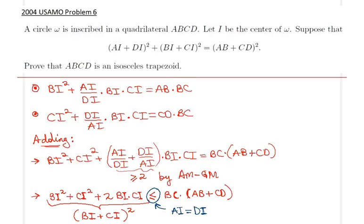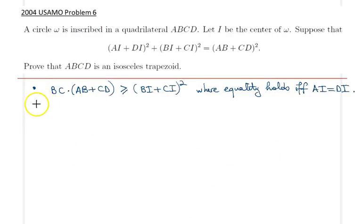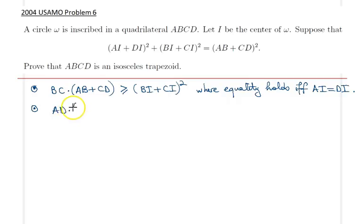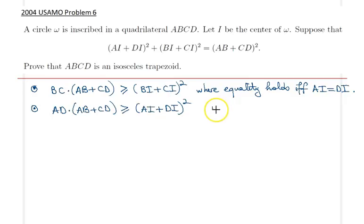By symmetry, it is also possible to derive a new expression by constructing a new point P2 using a different set of similar triangles. In that case, you get the symmetric form: AD · AB + CD · AB ≥ (AI + DI)², and the equality condition holds when BI = CI.